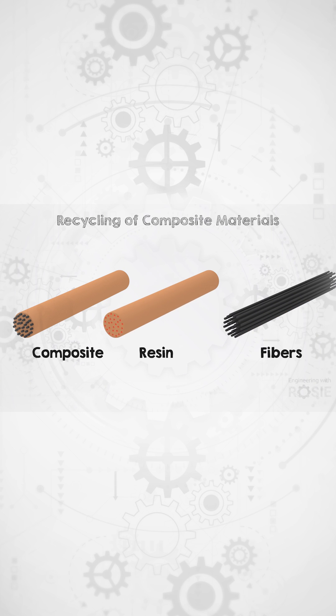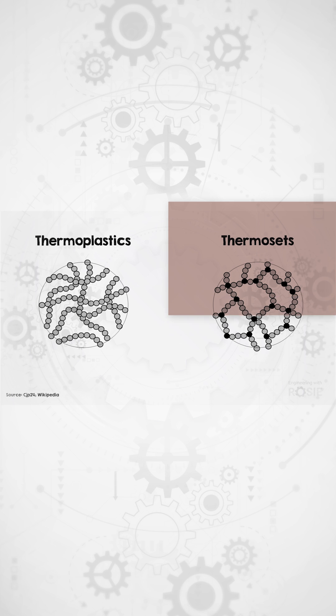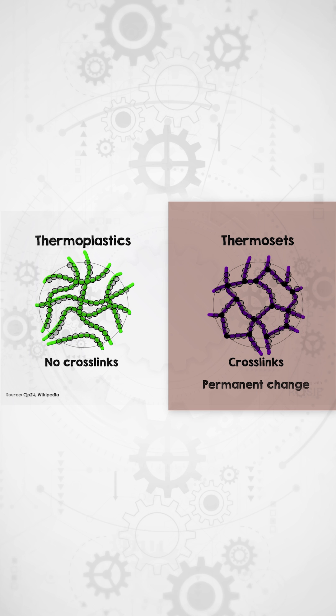The key to recycling composites is separating those two components without destroying them. The resin used in these blades is a thermoset. The polymers in thermosets form a complex cross-linked network when they're cured and those links can't be easily broken down again.